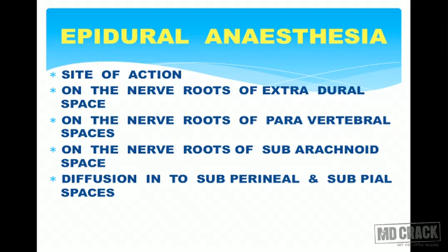Regarding the site of action: the brain is covered by three layers — dura mater, arachnoid, and pia mater. Epidural anesthesia is given in the epidural or extradural space. Once the drug is injected in the extradural space, it acts on the nerve roots of the extradural space. It also acts on nerve roots of paravertebral spaces, on nerve roots of the subarachnoid space, and can act by diffusion into sub-perineural and sub-pial spaces.